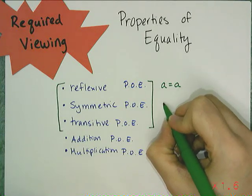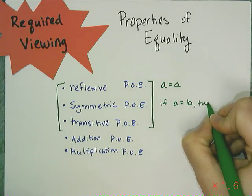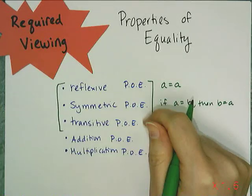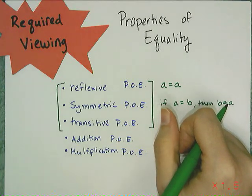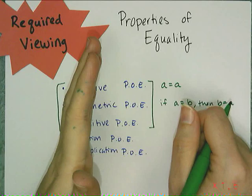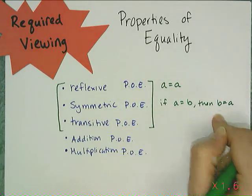Symmetric says that if A equals B, then B equals A. And you can use the symmetric property to rearrange the sides of the equation. So if you have the unknown on the right side but need it on the left side, then you can just swap it using the symmetric property.